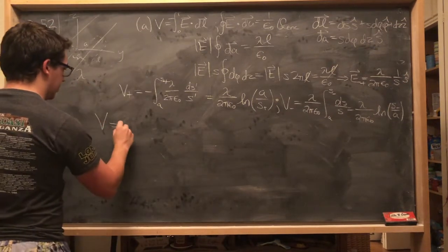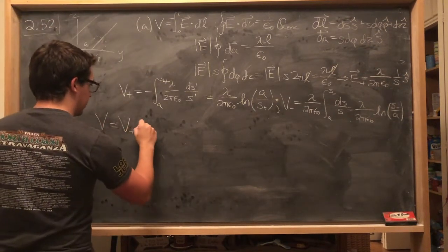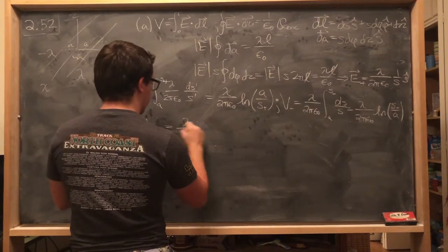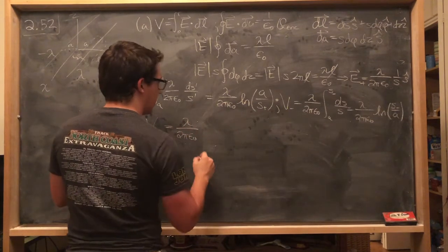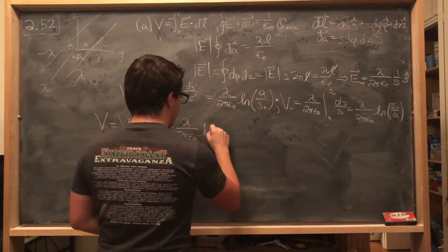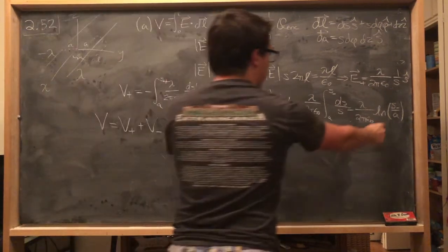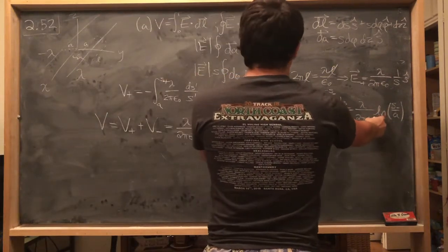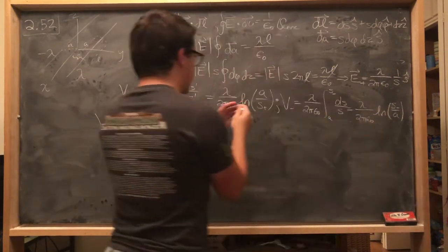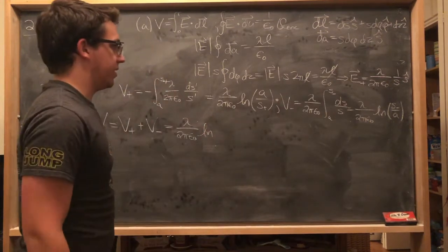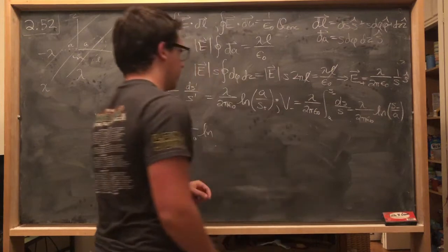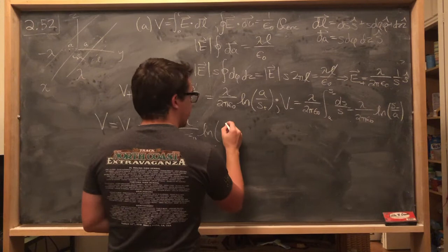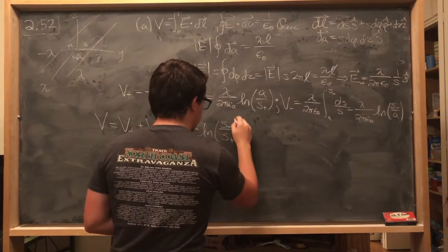And then again we'll have dS over S, which means this is lambda over 2 pi epsilon naught natural log S minus over a because we're doing the same thing. And so then, principle of superposition, our total potential is going to be V plus plus V minus, and so then we get lambda over 2 pi epsilon naught ln, and you would add these together. But if you remember your logarithmic rules, adding these we could just instead smash them into one term in the parentheses by multiplying the two arguments together. And so the a's would cancel, and we get S minus over S plus.